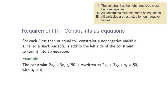Now let us discuss how to make sure that a constraint fulfills requirement 2 — that is, all constraints must be stated as equations. Suppose we come across a constraint which is 2x1 plus 3x2 less than or equal to 50. In this case, we would like to add an additional variable to the left-hand side so that this constraint can be written as an equation. We can add an additional variable called S1 into the left-hand side so that we get 2x1 plus 3x2 plus S1 equals 50, where S1 is greater than or equal to 0.